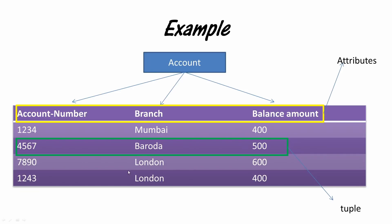Now what about the column? For example, the branch column contains values like Mumbai, Baroda, and London. These are all called a domain, because a column contains a single type of information. Branch will only contain branch information, account numbers will contain only numbers, and balance amount will only contain numerical values. So it will be one type of information per column — hence it is called a domain.